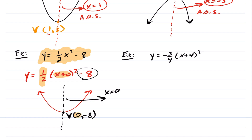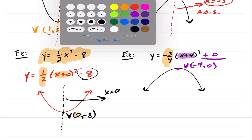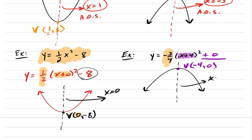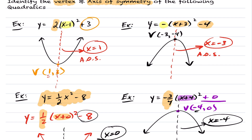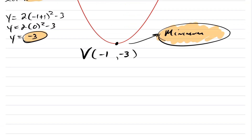The next quadratic is in vertex form with a negative leading coefficient, so it opens downwards. To find the vertex, the inside is zero when x equals negative 4. There's nothing written at the end, so there's a plus zero — the y-coordinate is zero. The vertex is (negative 4, 0). The axis of symmetry is a vertical line, so you grab the x-coordinate of the vertex: x equals negative 4. That concludes this lesson on vertex form — how to find the vertex, the axis of symmetry, and the direction of opening.